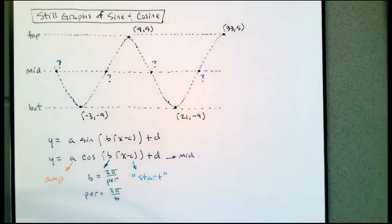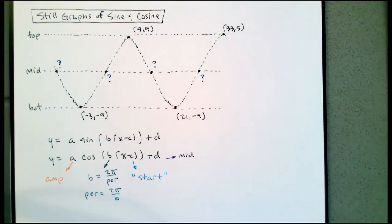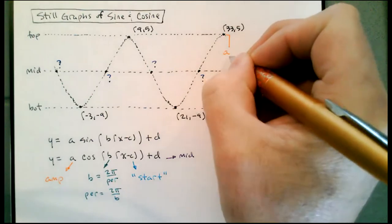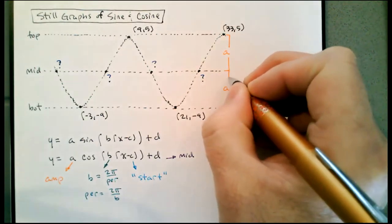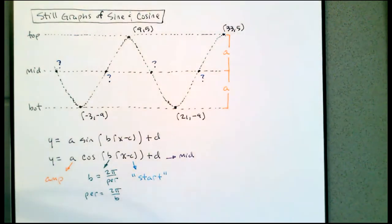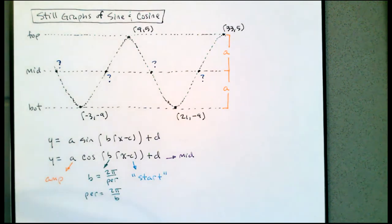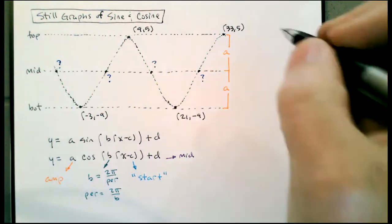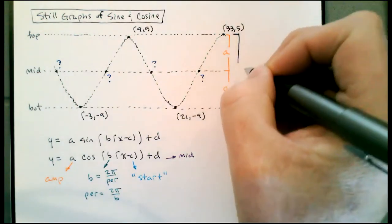Let's take a look at the given information and figure out each of these pieces. The plus D part is where the middle is, but we don't have any middle information directly. A is the amplitude — the distance from the middle to the top and also the distance from the middle to the bottom. However, the distance from the top to the bottom is going to be 2A, and we can calculate that. So I can take the distance from the top all the way to the bottom and say that's 2A.